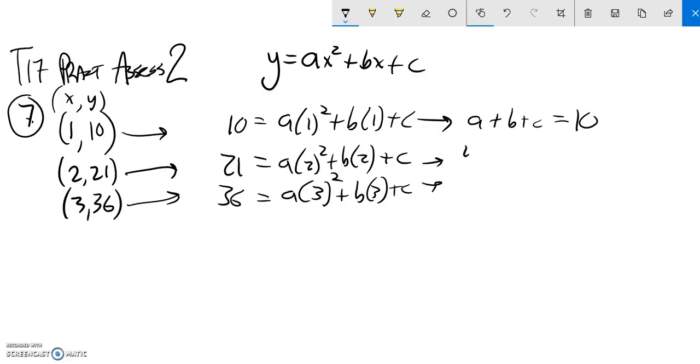2 squared is 4, so this would be 4A plus 2B plus C equals 21. And lastly, 3 squared is 9, so 9A plus 3B plus C equals 36.